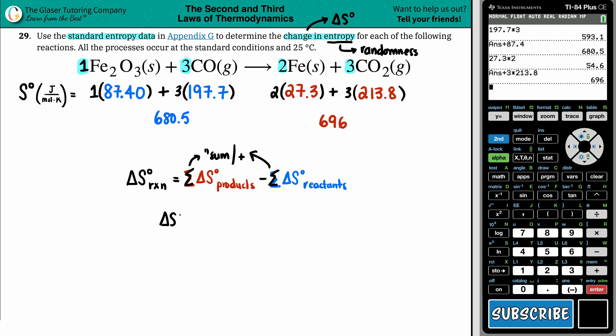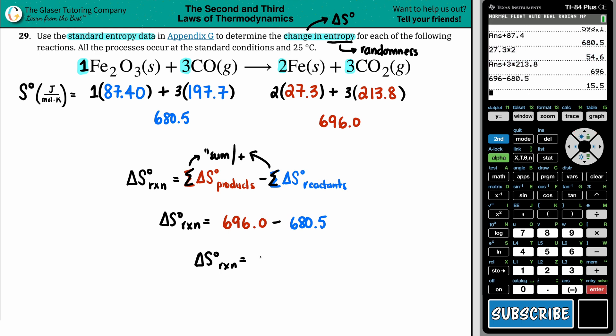So let's go for it. Delta S for the whole entire reaction would be the product value, which we got was 696. And technically it would be 696.0 if we did follow our sig figs. So maybe I'll just put that in there. 696.0 minus our reactants, which is 680.5. Delta S for the whole entire reaction equals calci time. Again, I'm going to grab this value, 696 minus, I'm going to grab the 680.5. And I get a positive value, 15.5.